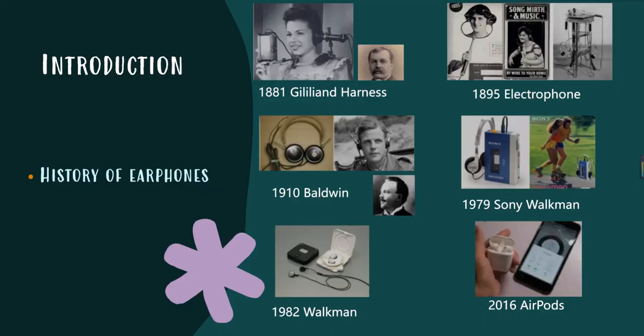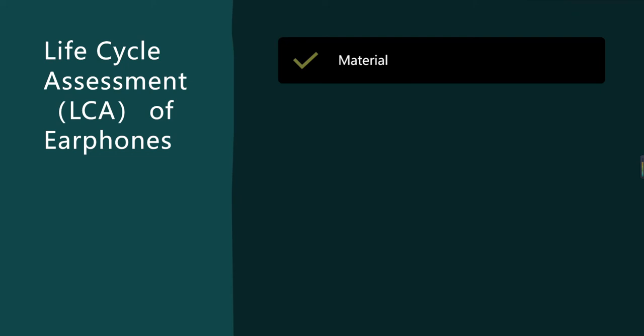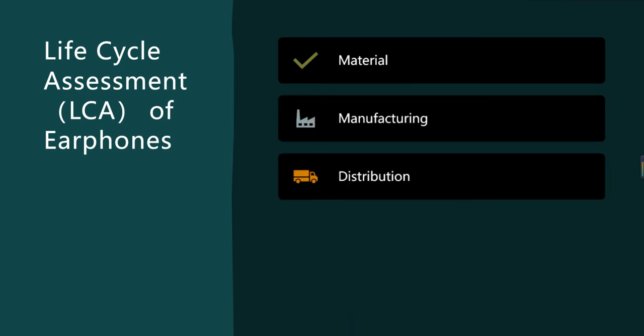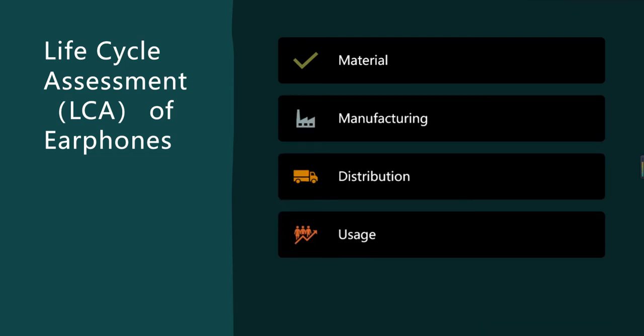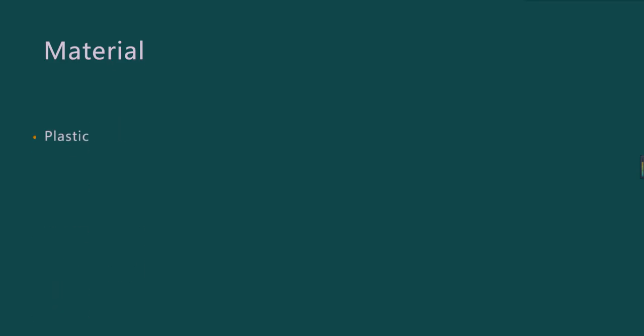Next, I will introduce the life cycle assessment of earphones, including materials, manufacturing, distribution, use, and disposal. First of all, the earphone is made of plastics, copper wires, metal plugs, and rubber earplugs.